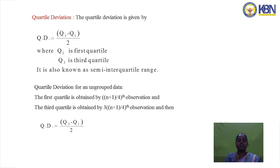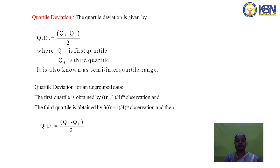Quartile deviation is used to measure the quartiles of the data. The data is divided into four equal parts: Q1, Q2, Q3, and Q4. The quartile deviation is given by QD = (Q3 − Q1) / 2, where Q1 is the first quartile and Q3 is the third quartile. It is also known as the semi-interquartile range.